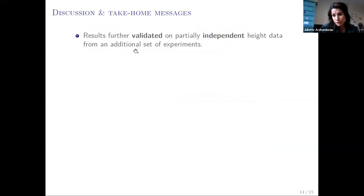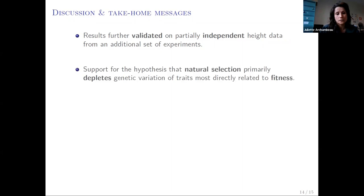Importantly, we further validated our results on a partially independent height data set from another provenance trial in which we had access to the additive genetic variance. In fact, we found exactly the same results. As we only found association for height and not for other traits, our results support the hypothesis that natural selection primarily depletes quantitative genetic variation of traits that are most directly related to fitness.